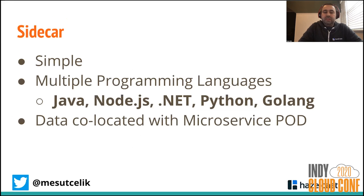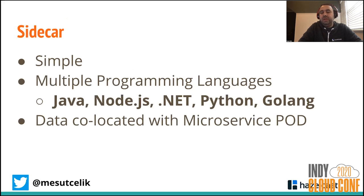The sidecar is simple and supports multiple programming languages — Java, .NET, Python, Go, and more. All the client libraries are open source and available on GitHub. Data is collocated with the microservice pod in Kubernetes, which is different from embedded since in embedded it is inside the Java Virtual Machine.